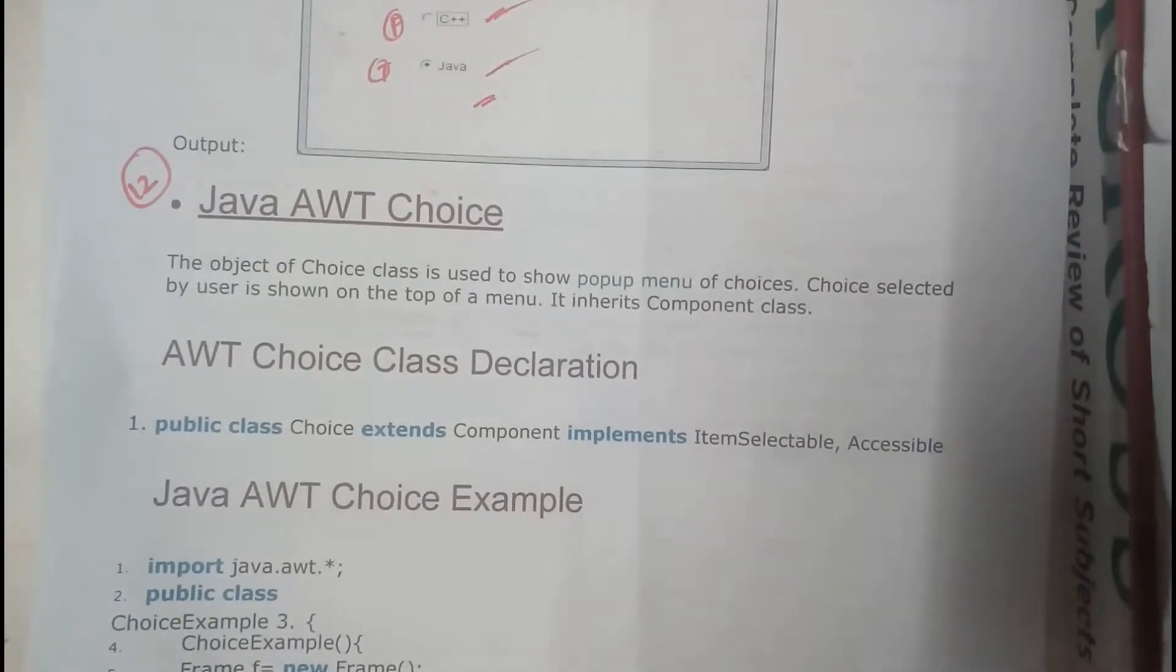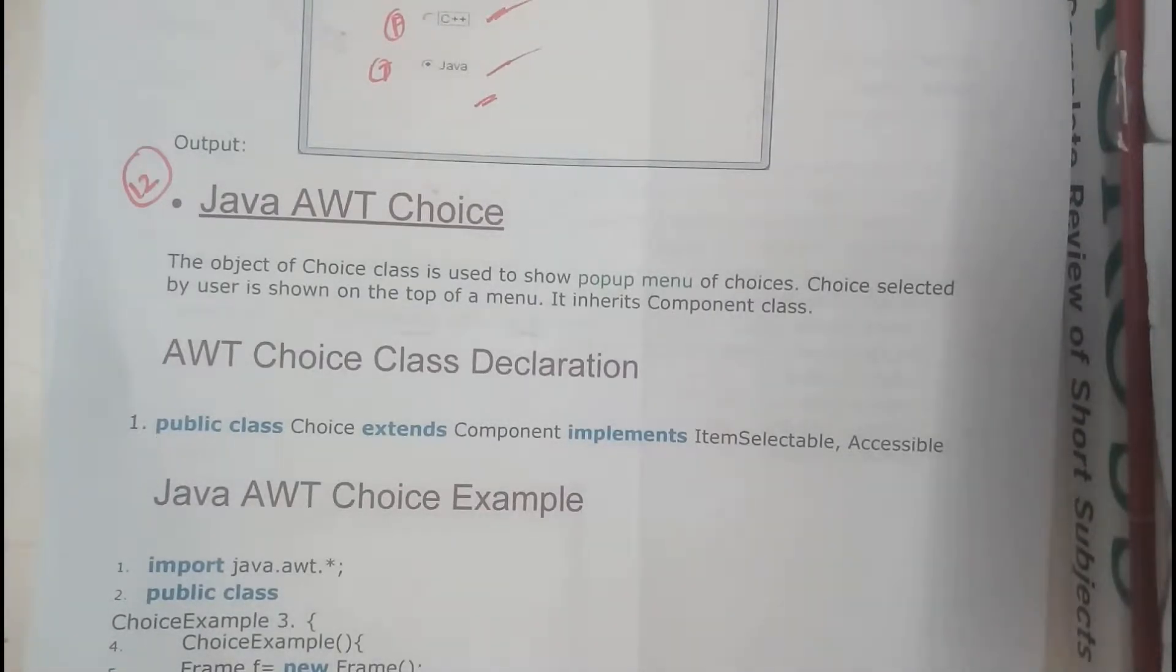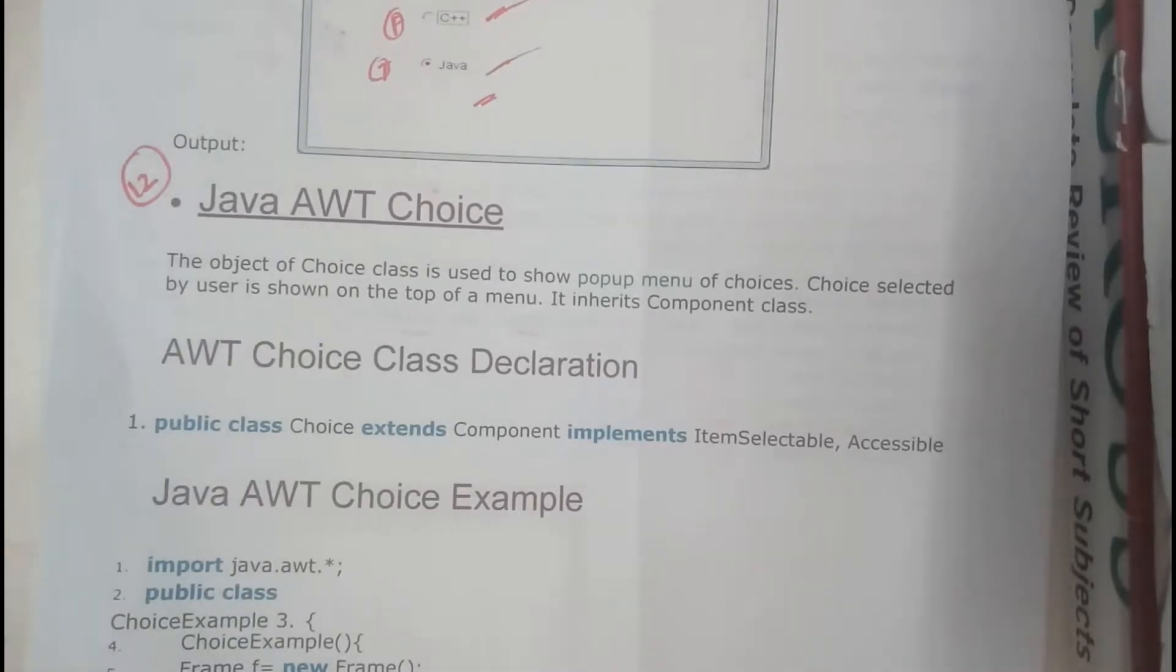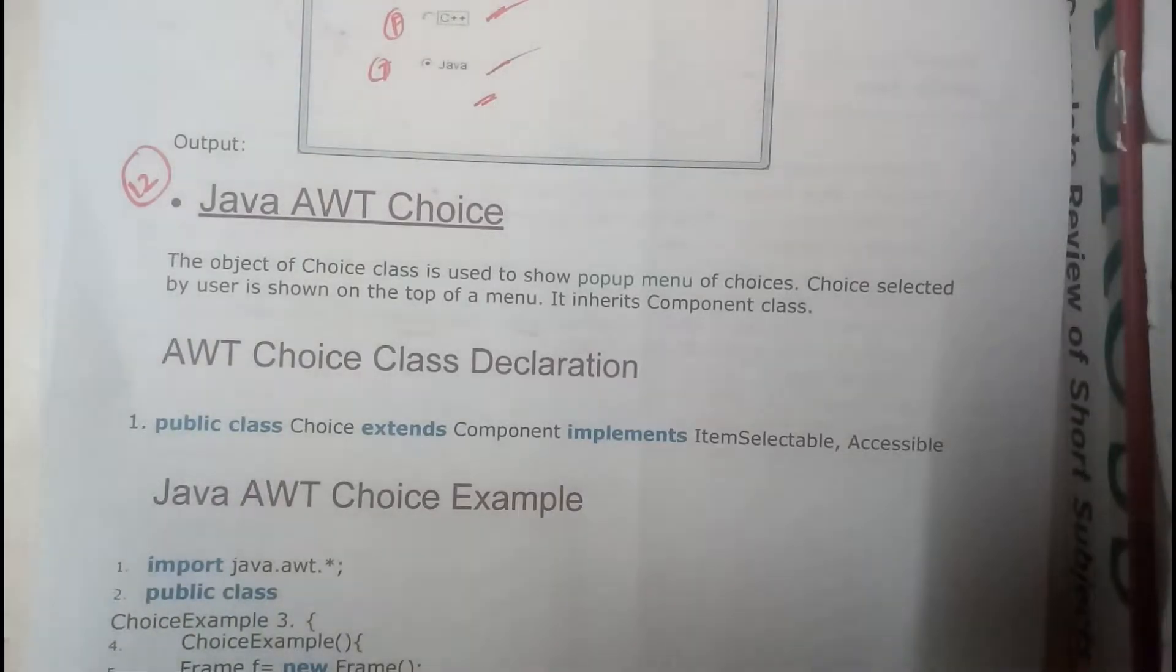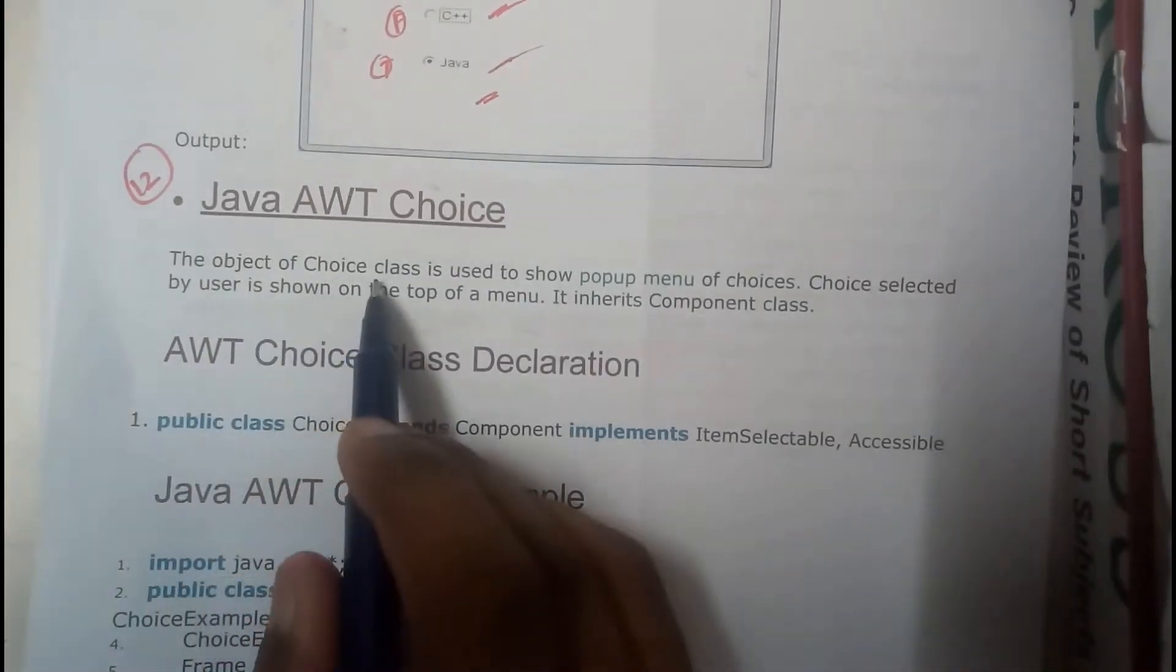Hello guys, we are back with our next tutorial. In this tutorial, let us go through Java AWT Choice. Basically, Choice is a list of things in which you can select a particular thing according to your requirement.